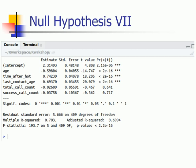Now coming back to our problem. I have five variables: age, time after hot, last contact age, total call count, and success call count. I have a p-value associated with each variable, which will signify which are significant and which are not.